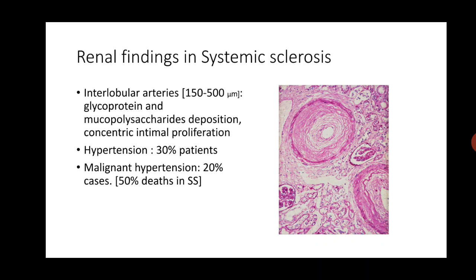Kidneys are also involved in systemic sclerosis, where the interlobular arteries are mostly affected. These arteries have a luminal diameter of 150 to 500 micrometers. The intima of these arteries gets deposited by glycoproteins and glucopolysaccharides and there is concentric intimal proliferation. This gives rise to hypertension in as many as 30 percent of patients, and in some patients the hypertension becomes very severe — known as malignant hypertension — which can lead to death in 50 percent of those patients.